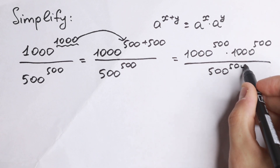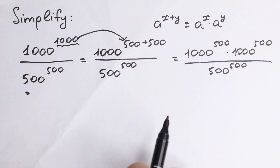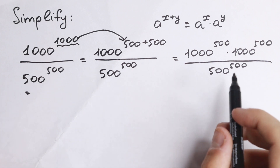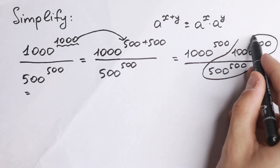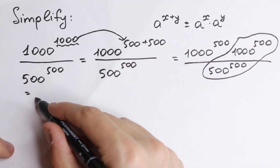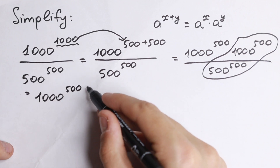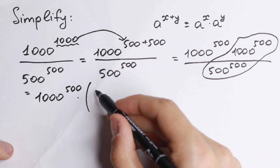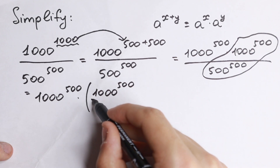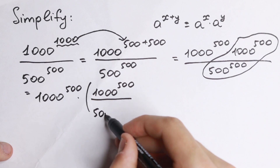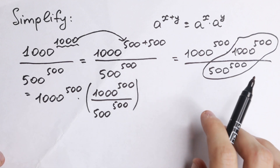And 500 to the power of 500 in our denominator. So what are we going to do next? Let's group elements right here. We can do this because this is multiplication, so we can easily group these elements. At first writing 1000 to the power of 500, and right here we group it — times, in the numerator, 1000 to the power of 500 dividing by 500 to the power of 500. Nothing changed; if we multiply it we will have the same.